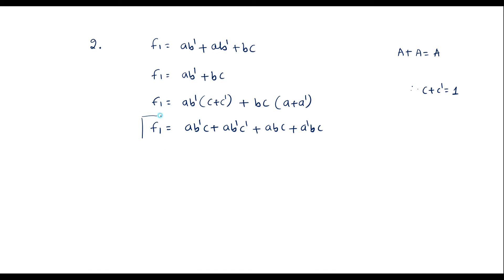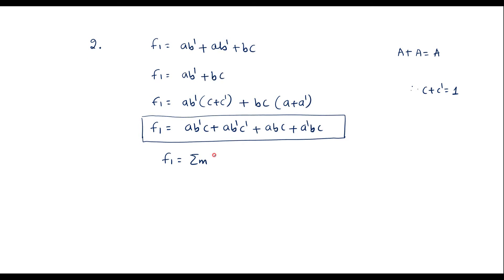This is the min-term canonical form. It can also be represented as F1 equals summation m: ab dash c is 1,0,1 that is minterm 5; ab dash c dash is 1,0,0 that is minterm 4; abc is 1,1,1 that is minterm 7; a dash bc is 0,1,1 that is minterm 3. In increasing order: F1 = Σm(3, 4, 5, 7).